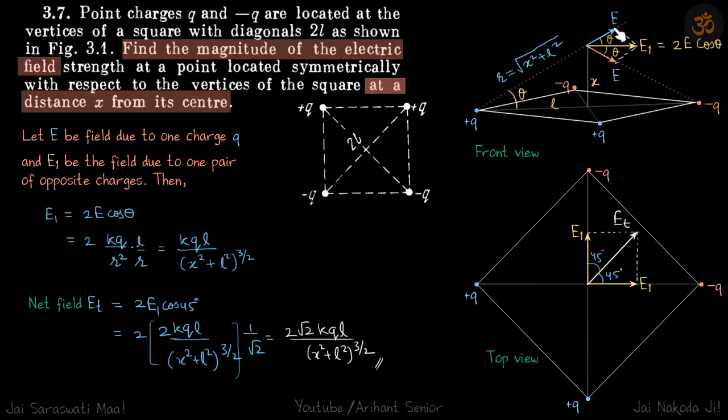The eventual field because of these two will be, let's say E_net, its value will be 2E cos theta. Let E be the field due to one charge Q and E_net be the field due to one pair of opposite charges. E_net equals 2E cos theta.